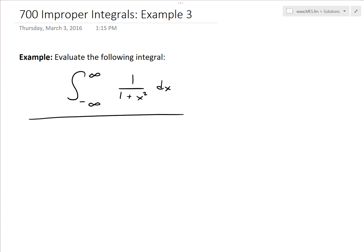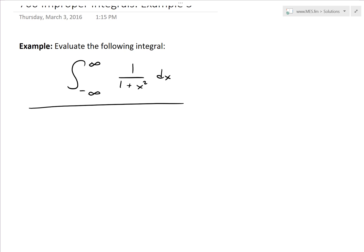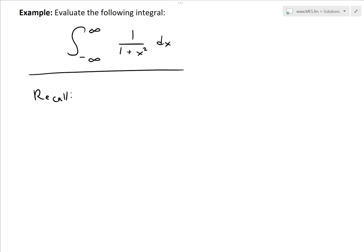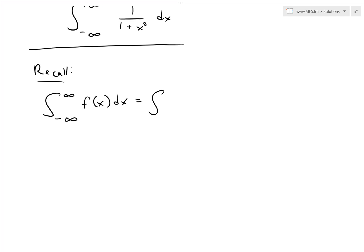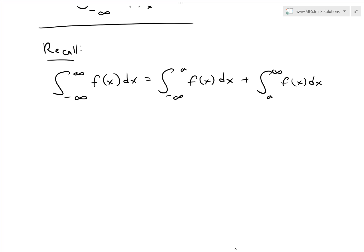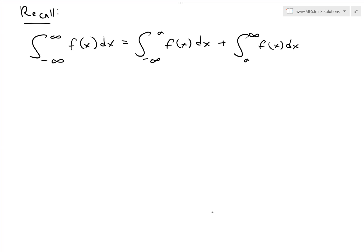Recall from my earlier video the definition of Type 1 improper integrals — infinite intervals where you have an integral with infinity at the bottom, top, or both. Using properties of integrals, we can break this up: the integral from negative infinity to infinity of f(x) dx equals the integral from negative infinity to a of f(x) dx plus the integral from a to infinity of f(x) dx.